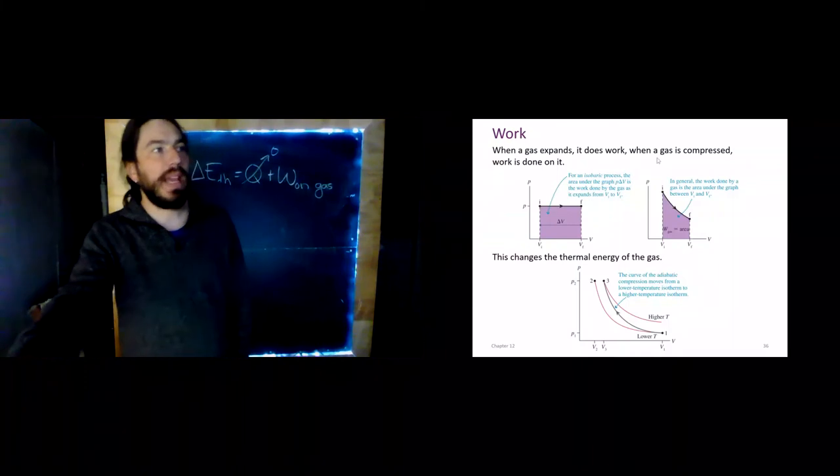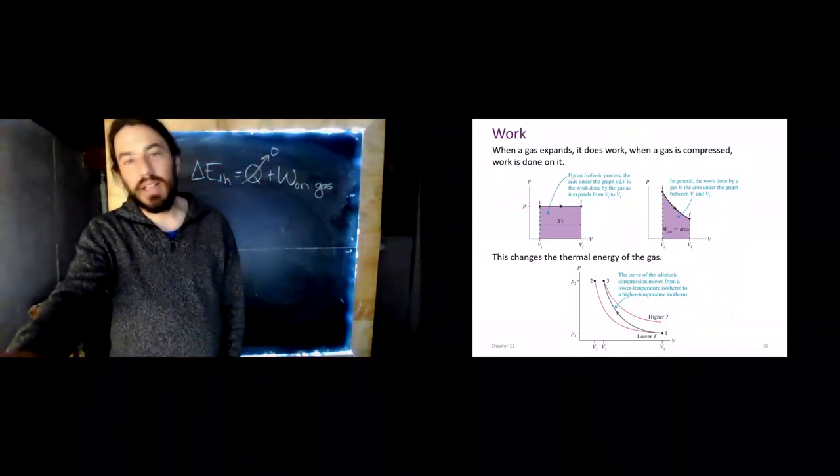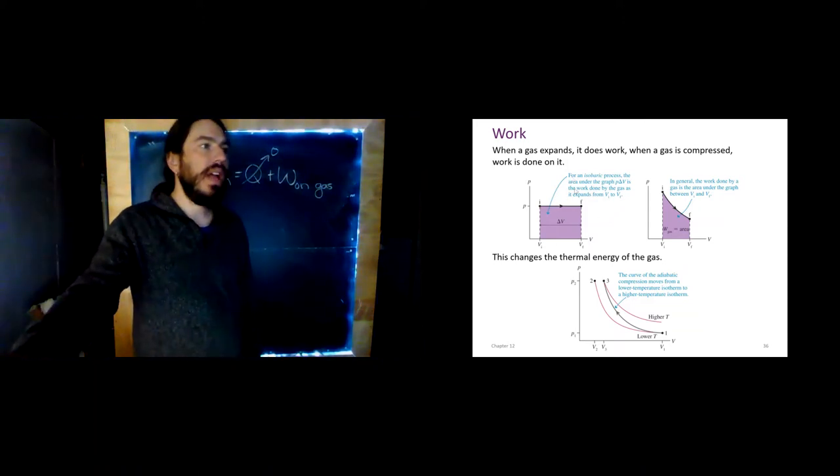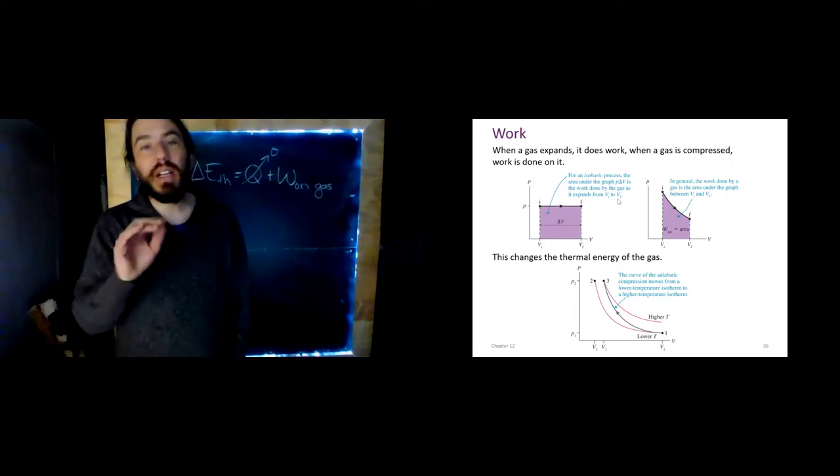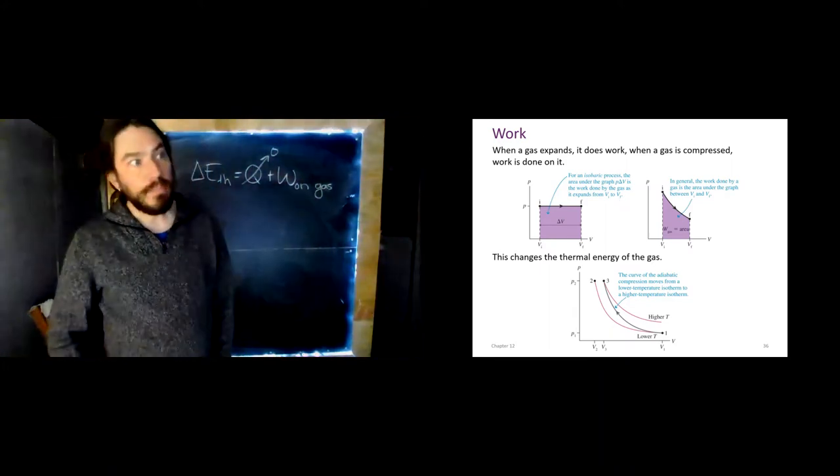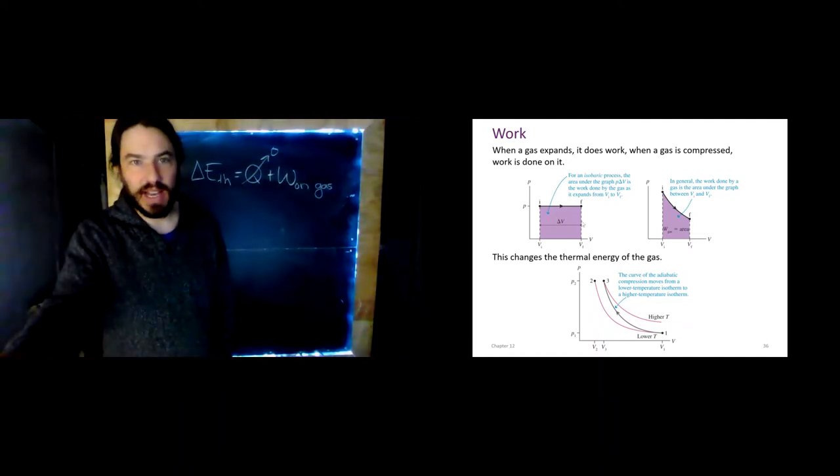So we're going to change our thinking here from work on the gas to work by the gas. So when a gas expands, it does work. And when a gas is compressed, work is done on it. And so here we see an isobaric process. The area under the graph is PΔV. And that is the work done by the gas as it expands from V_I to V_F.